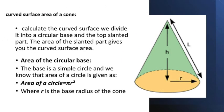Curved surface area of the cone. To calculate the curved surface, we divide it into a circular base and the top slanted part. The area of the slanted part gives you the curved surface area. Area of the circular base — what is the formula, children? That is pi R square.